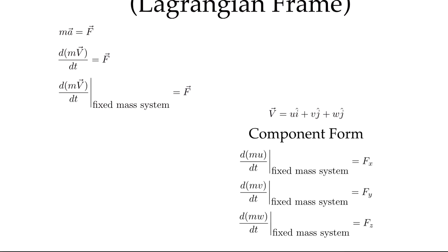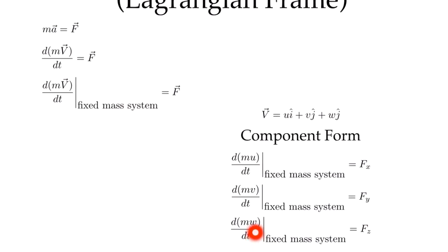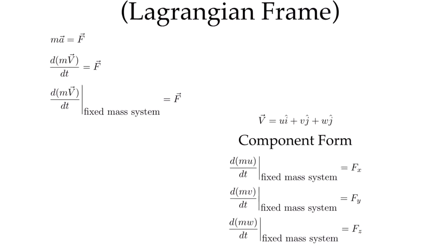In component form we can write it this way where inside our acceleration term we're taking the time derivative of the u component of the velocity, and we're looking at the forces in the x direction. Or the v velocity component and the forces in the y direction. Or the w velocity component and the forces in the z direction.